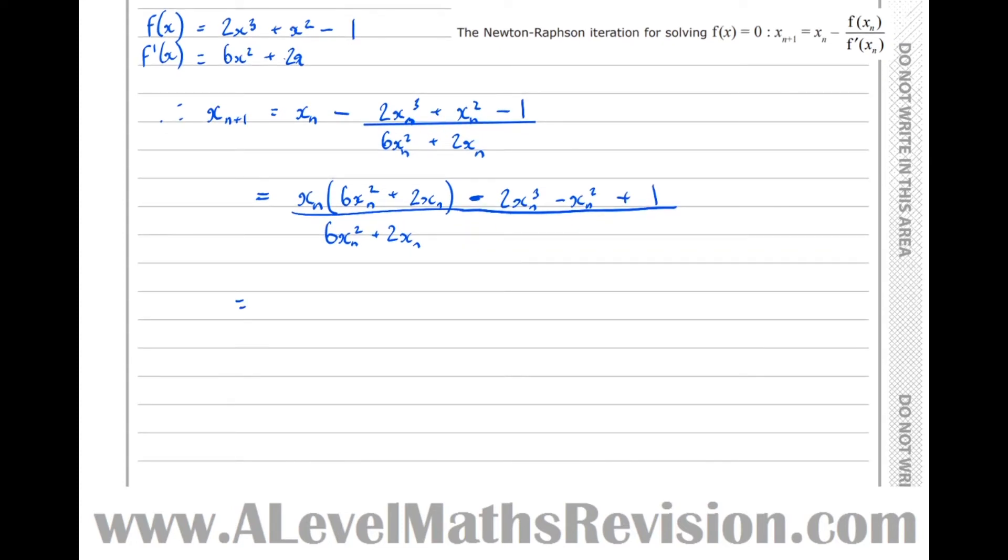Let's multiply this out, so 6xn cubed plus 2xn squared, take 2xn cubed, take xn squared plus 1, and that's all over 6xn squared plus 2xn. We've got 6xn cubed take 2xn cubed.